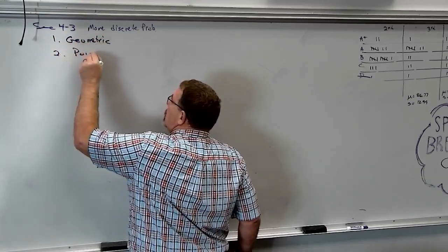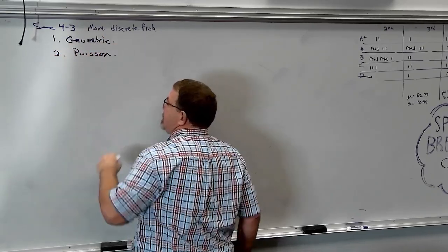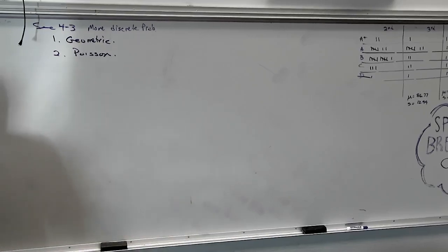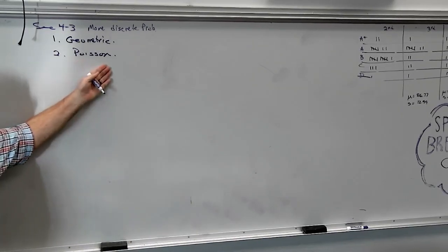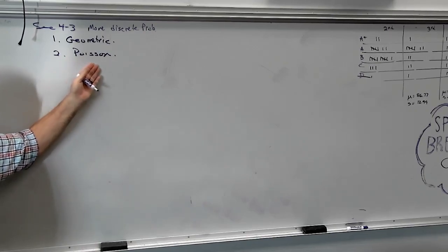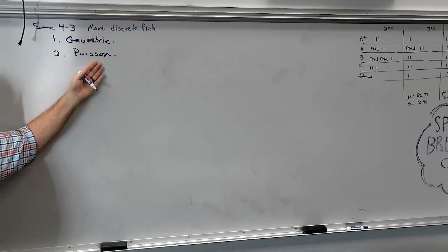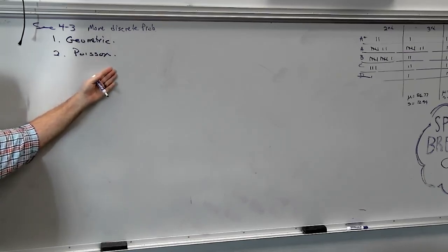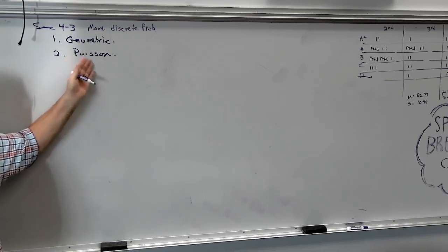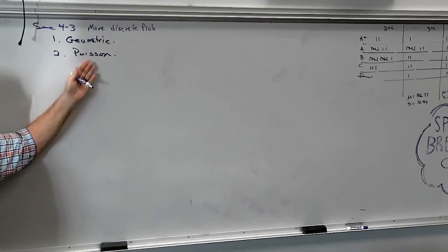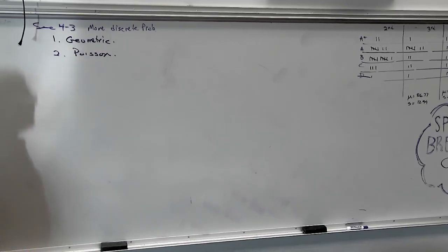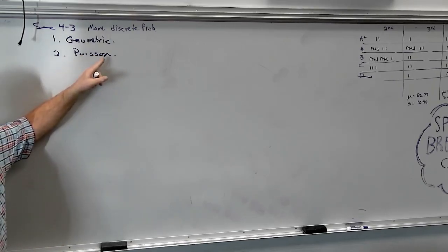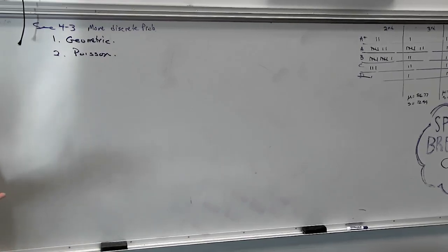Number two. I know I always mess this up and people that have taken French always correct me, but I always say Poisson, but I think it's Poisson. How do you say that? Who's had French? It's French. It says Poisson. I know it means fish. Somebody told me that it means fish or whatever it is. But anyway, it's French.